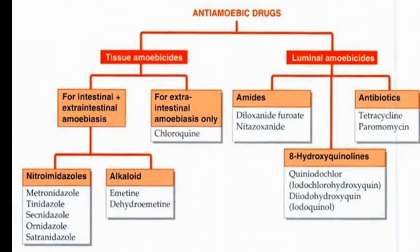There are actually two categories: tissue amoebic sites and luminal amoebic sites. In tissue amoebic sites there are two sub-categories — intestinal and extra-intestinal amebiasis. For intestinal plus extra-intestinal amebiasis there are two classes: nitroimidazole classification and alkaloid classification. The nitroimidazole drugs are metronidazole, tinidazole, secnidazole, ornidazole, and the alkaloid classification includes emetine and dehydroemetine. For extra-intestinal only, chloroquine is used.